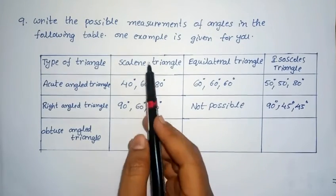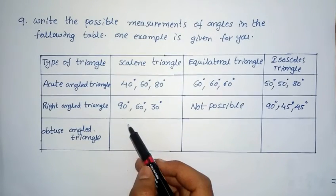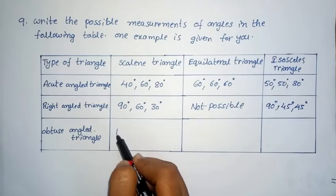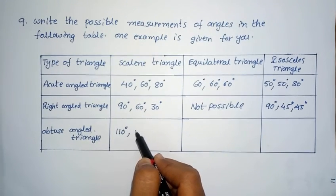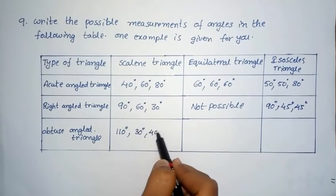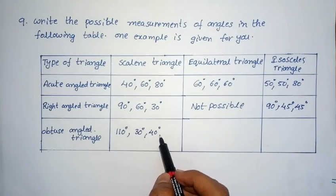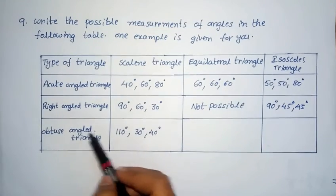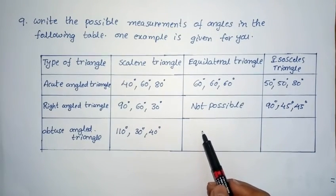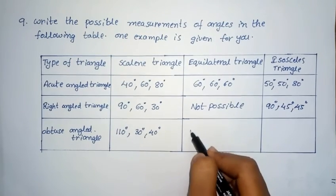For equilateral triangle and right angle triangle: right angle means 90 degrees, but in an equilateral triangle a 90-degree angle is not possible. So this combination is not possible. For isosceles triangle and right angle triangle: one angle equals 90 degrees, and the remaining two equal angles are 45 degrees and 45 degrees. This satisfies both isosceles and right angle triangle.